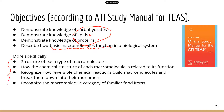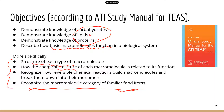Here is some specific information from the TEAS study manual. I think this is actually more helpful because it's more specific about what you need to know. For example, you need to know the structure of each type of macromolecule and how this chemical structure is related to the function. You need to be able to recognize the reversible chemical reactions that make big macromolecules and the reactions that break them down.